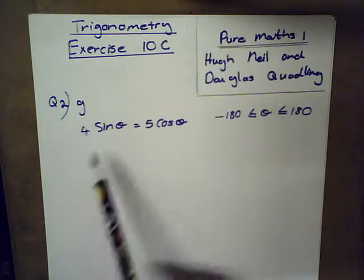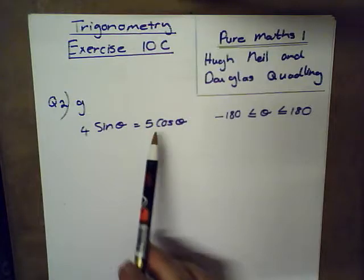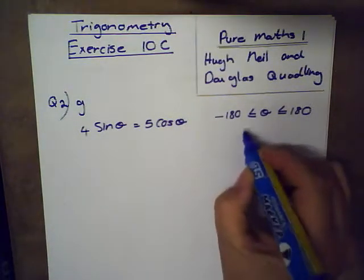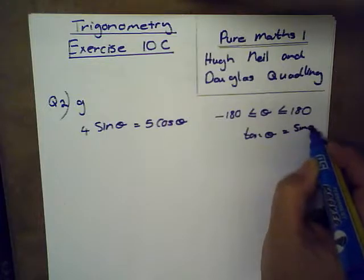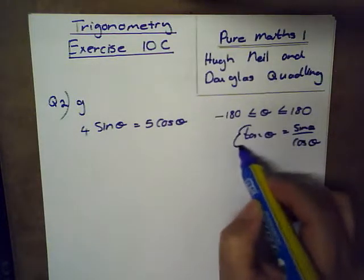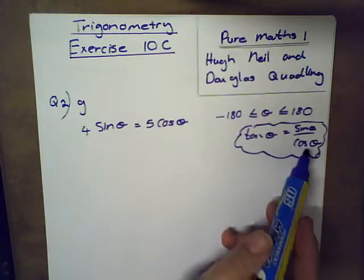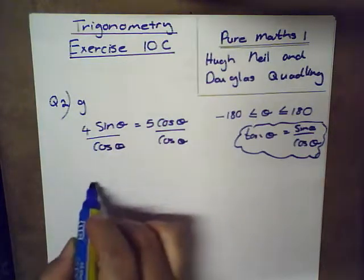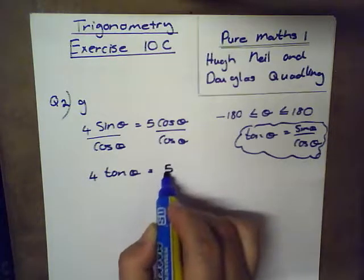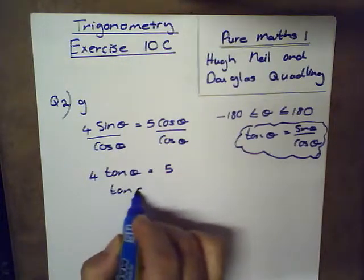The first step is to look at the relationship between sine and cosine. We know that tan theta equals sine theta over cosine theta. We are going to use this identity to solve this question. I want sine theta over cosine theta, so I'm going to divide both sides of my equation by cosine theta. That gives me 4 tan theta equals 5. I only want tan theta, so I'll divide both sides by 4.